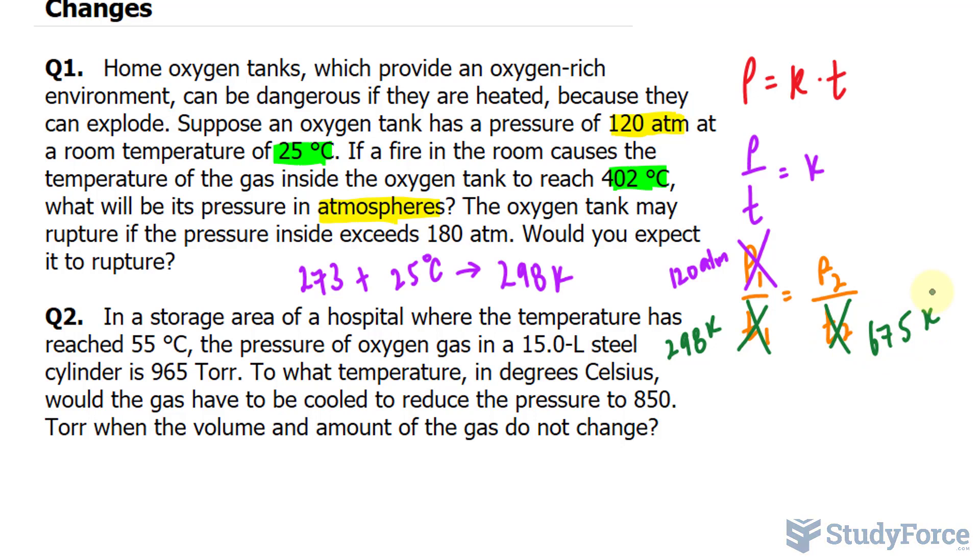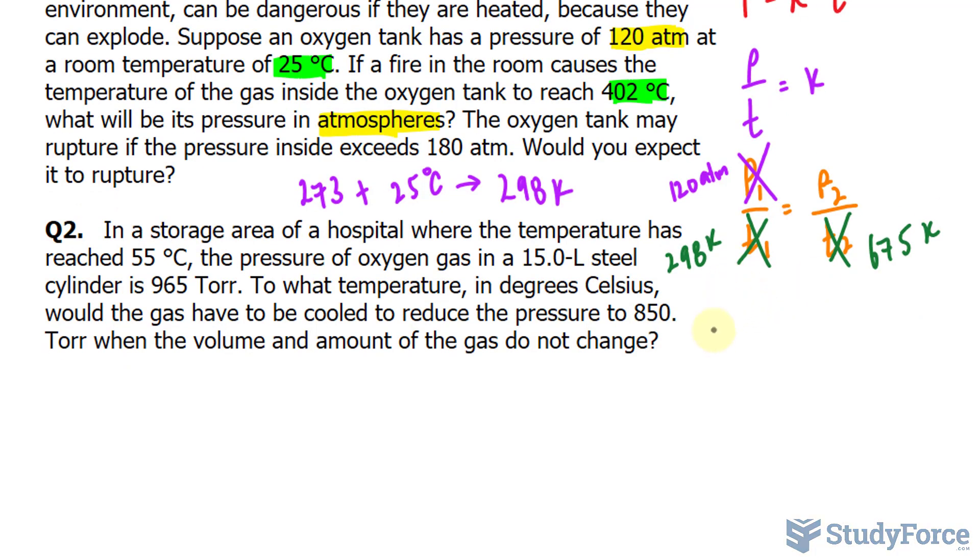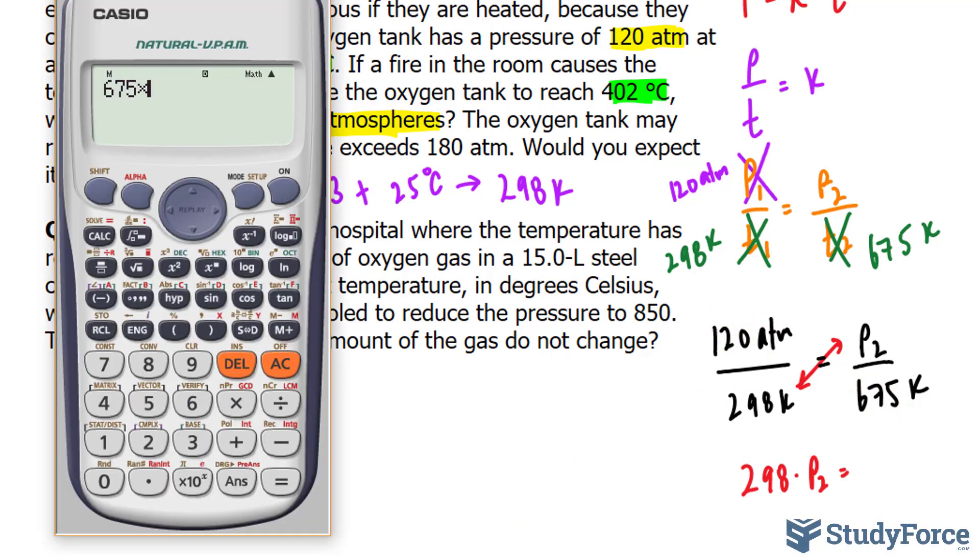Now, to solve this, remember this is a proportion. A proportion, by definition, is when you have one ratio equal to another ratio. Let me rewrite this for clarity. We have 120 atm over 298 Kelvin is equal to p sub 2 over 675 Kelvin. To solve proportion problems, we cross-multiply. So 298 times p sub 2, that's 298 multiplied to p sub 2. And that's equal to 675 times 120. So 675 times 120 is 81,000.